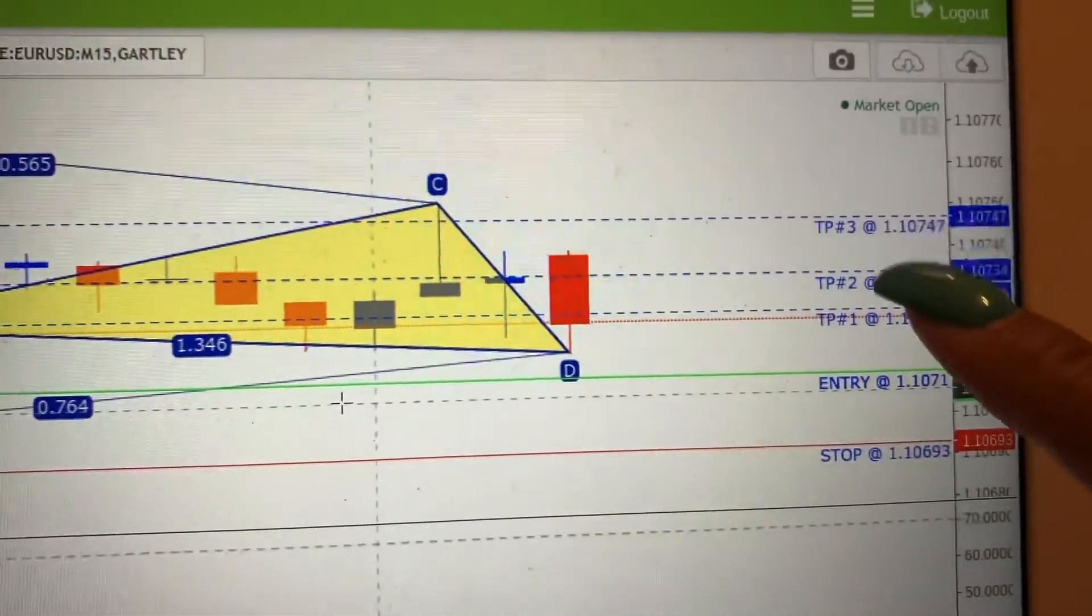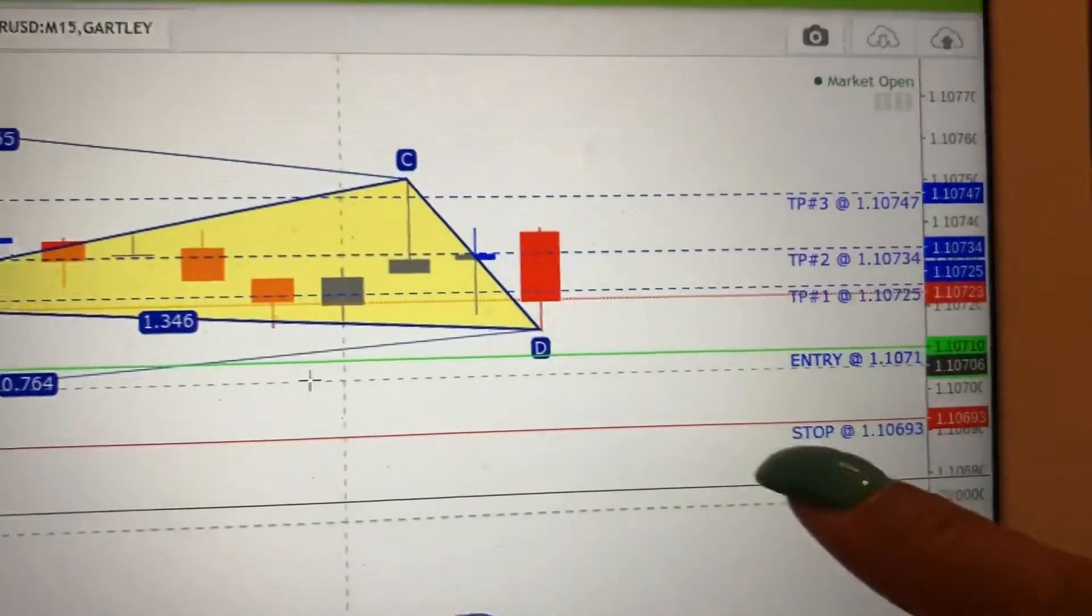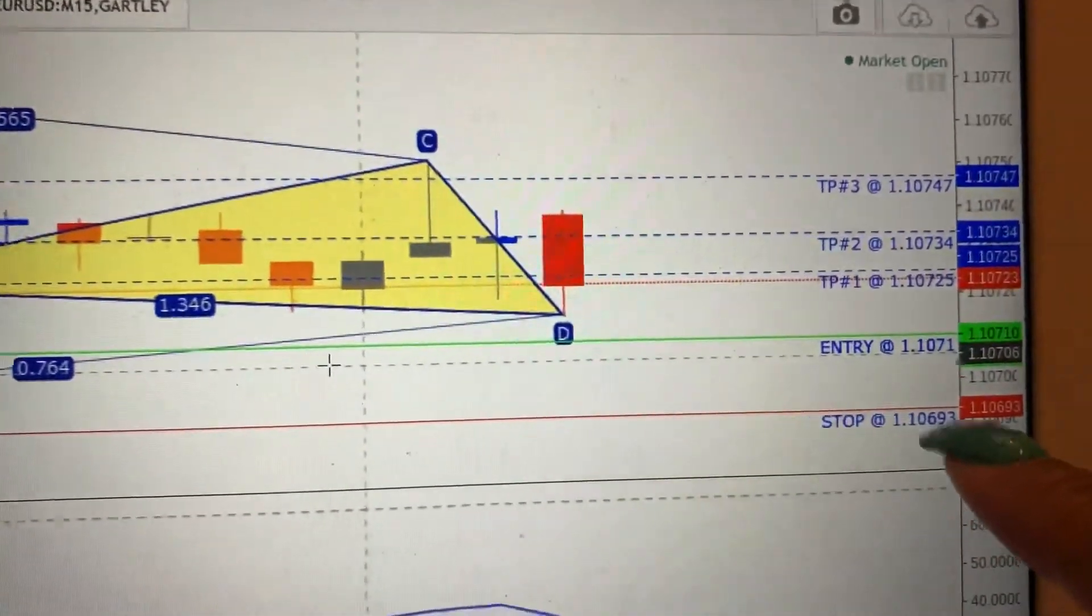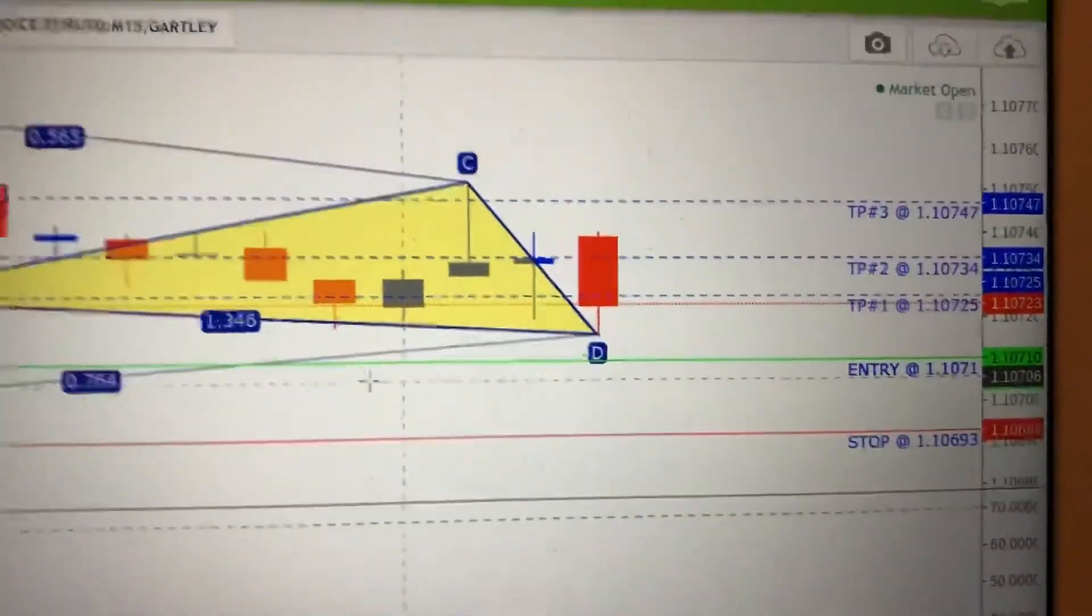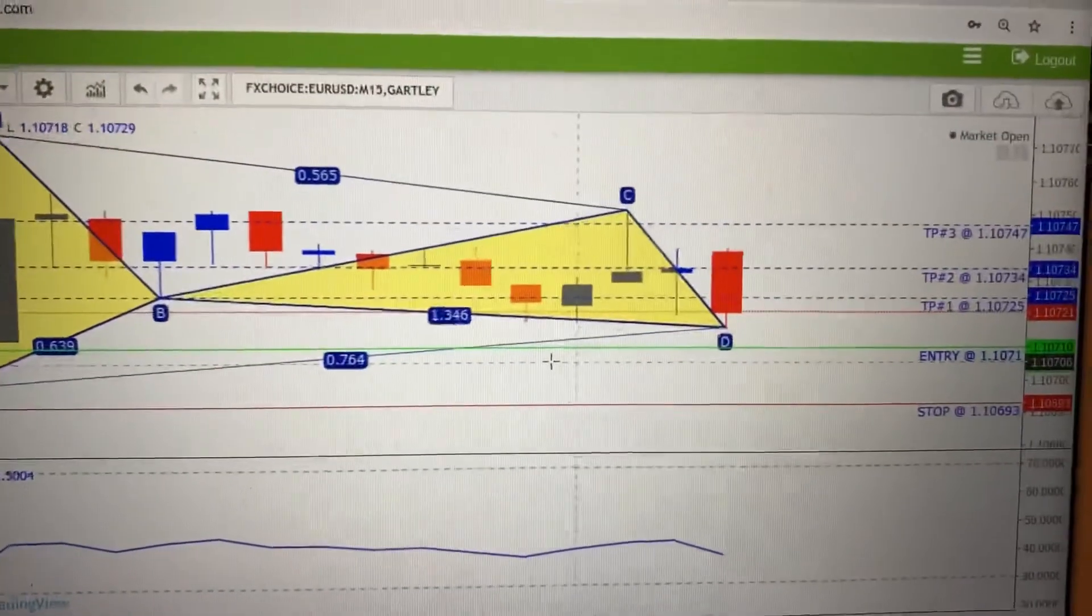So, this is your entry point. You pick one of the take profits, and you set your stop loss here in case the market doesn't go up like we want it, and it goes down. It'll stop you out with a smaller loss. That's it, guys. I'll see you next time.